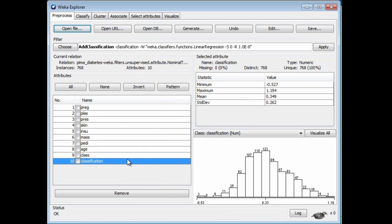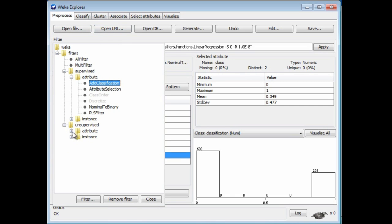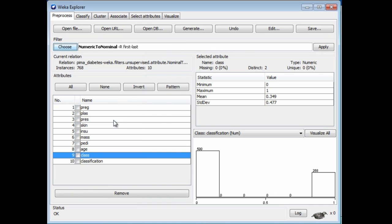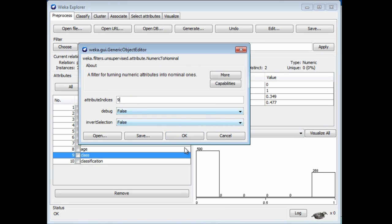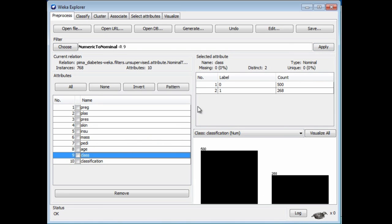Now we've got this classification attribute. What I'd like to do now is to convert the class attribute back to nominal, because it's numeric. I want to use 1R now, and 1R will only work with a nominal class. So let me convert that. I guess I want numeric to nominal, and I want to run that on attribute number 9. And let me just apply that, and sure enough, I've got the two labels. The labels are 0 and 1. This is a nominal attribute with these two labels.